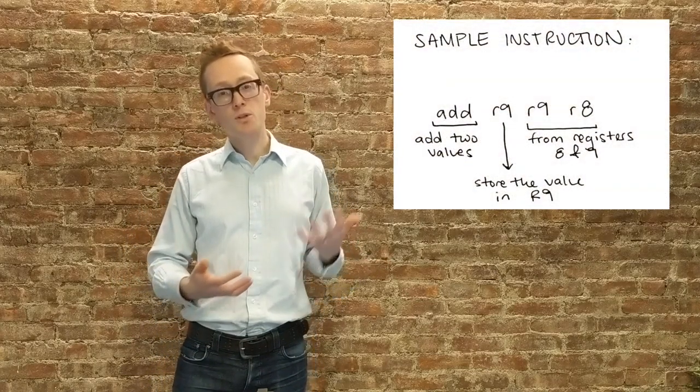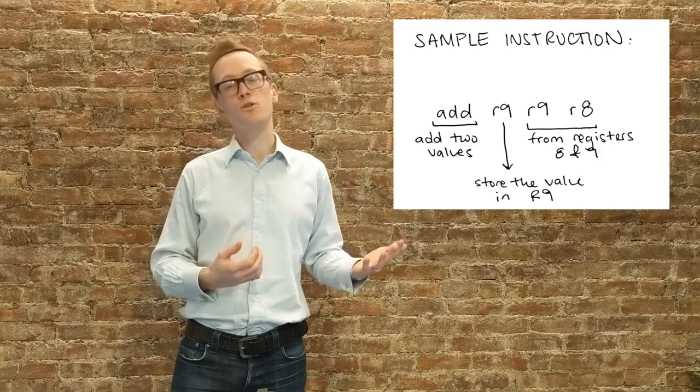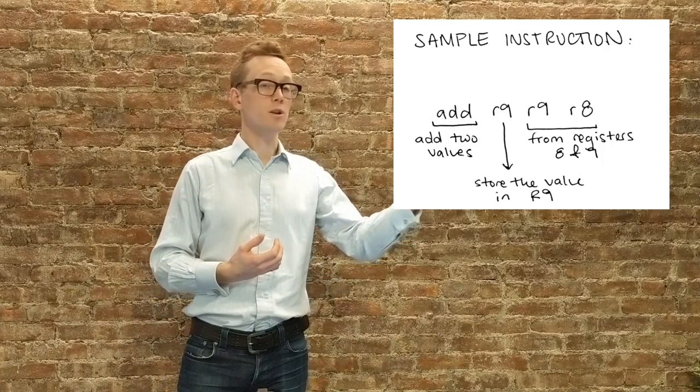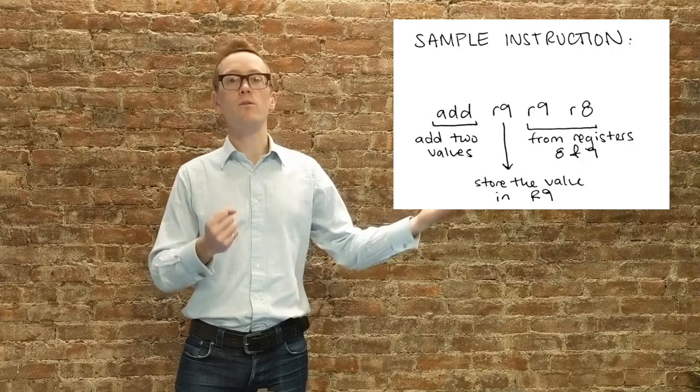Data and registers can be read and modified by instructions. Instructions are single steps in your program that the CPU will then execute. So for example, to add two numbers you will use an instruction that can take the value in R8 and add it into the value of R9.